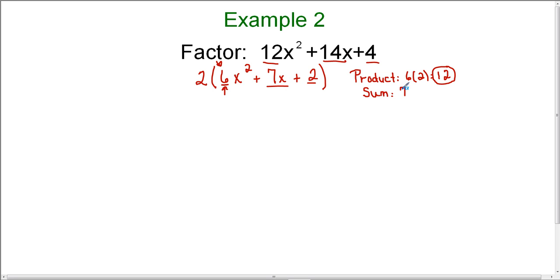I need to find two numbers that multiply to get 12 and add to get 7. You could write down all the factors of 12. Notice that these are both positive, so both factors are going to be positive. This becomes really easy. I just need to find the two factors that add to get 7. 3 times 4 is 12, and 3 plus 4 is 7.